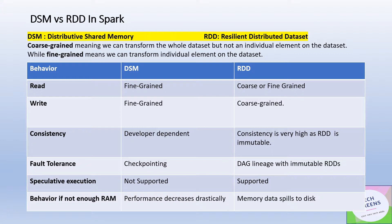The next behavior is write. Write behavior in DSM is absolutely fine-grained — the lower-level elements in the dataset are accessed and that's how writes happen. In the RDD world, writes are coarse-grained — the entire dataset is written at once; we cannot operate on individual elements while doing a write. So writes in RDDs are coarse-grained, while they are fine-grained in DSM.